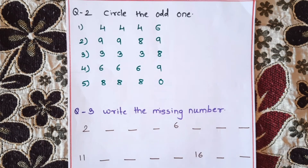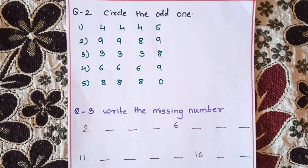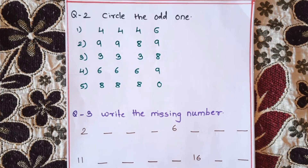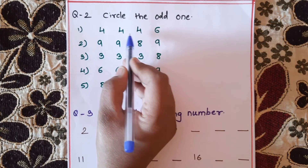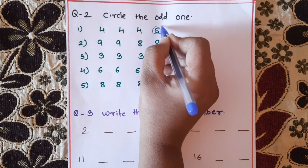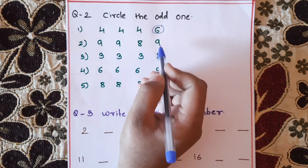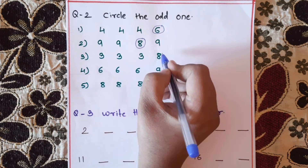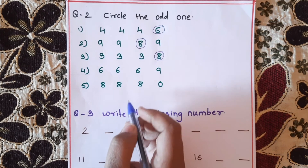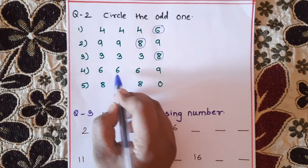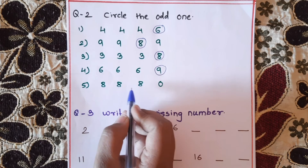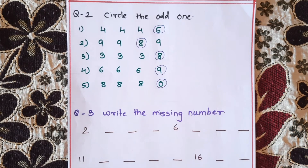The next question is: Circle the odd one out. For example: 4, 4, 4, 6 — 6 is the different number. Next: 9, 9, 8 — 8 is different. Next: 3, 3, 3, 8 — 8 is different. Next: 8, 8, 8, 6 — 6 is different. Next: 9, 9, 9, 0 — 0 is different. Total 5 questions.